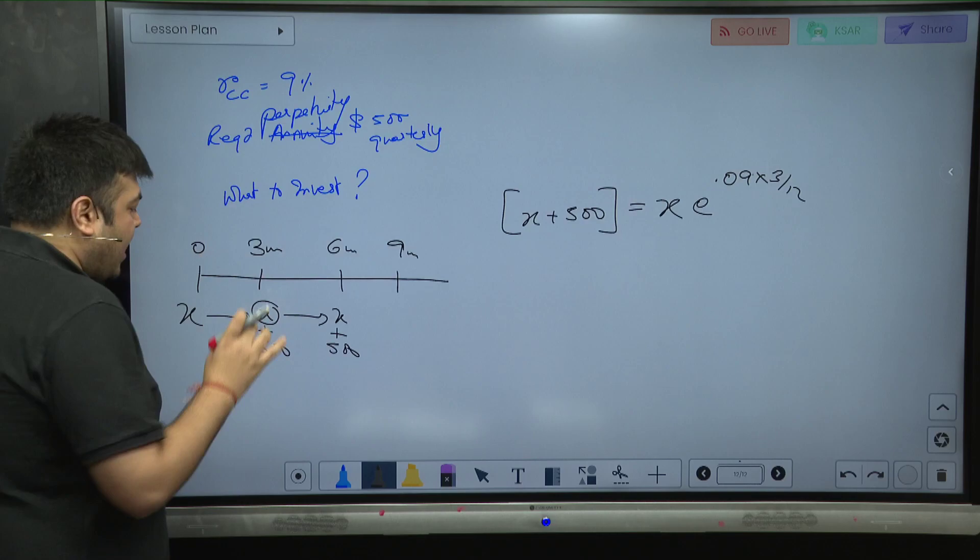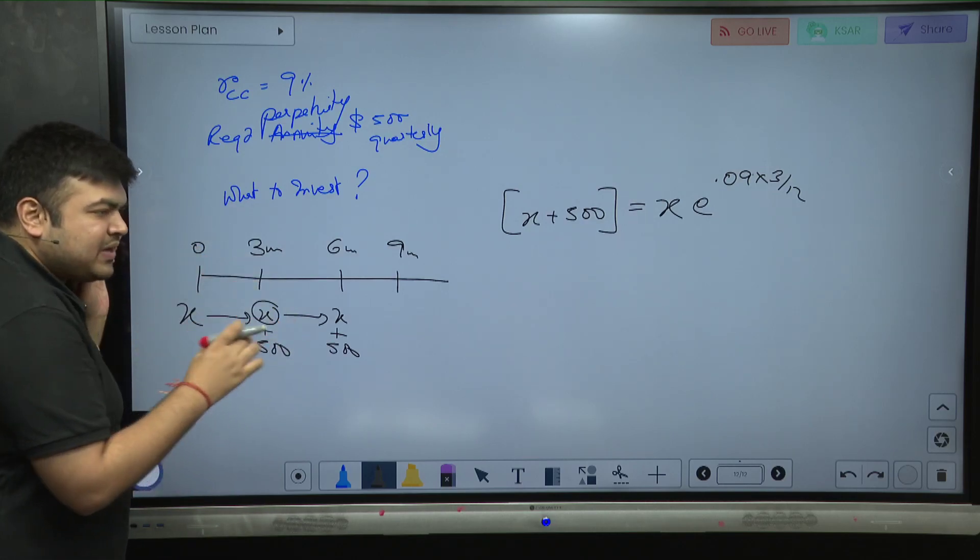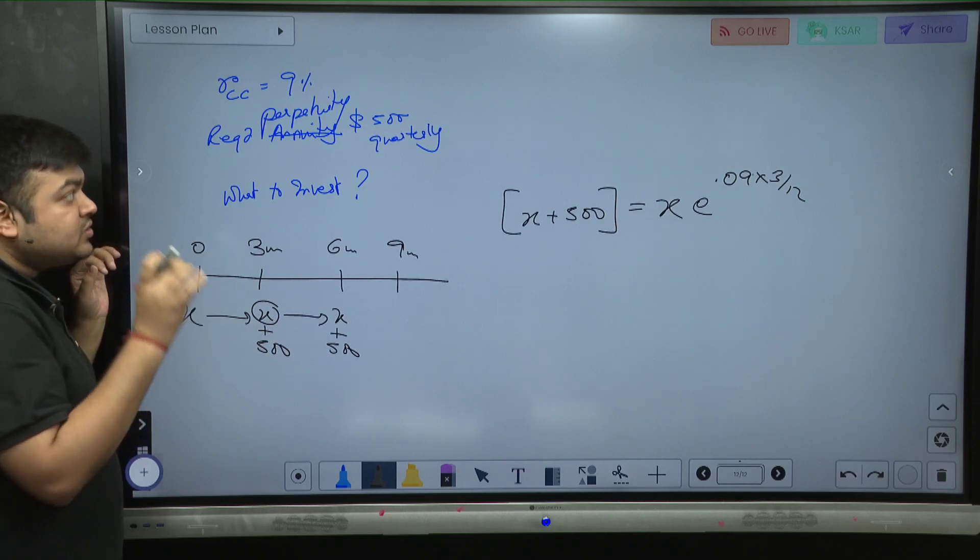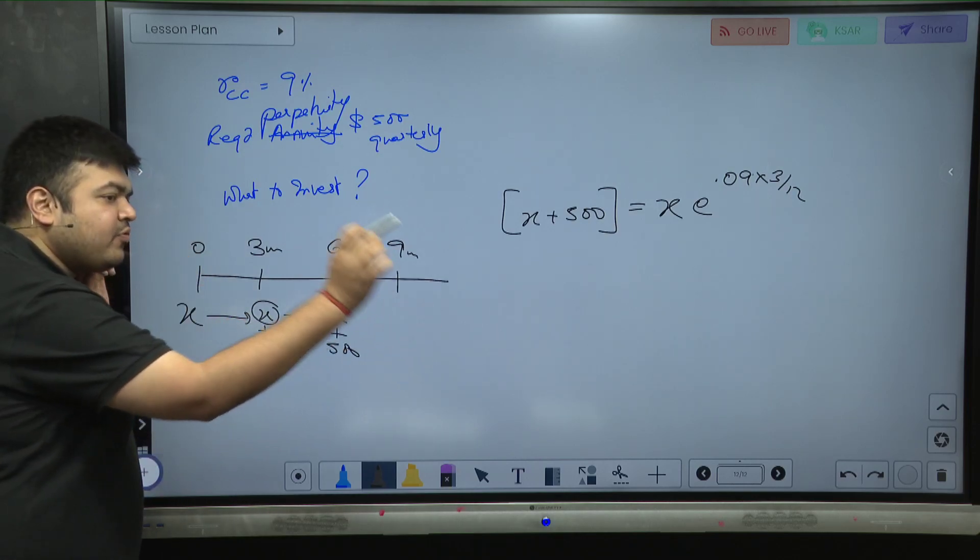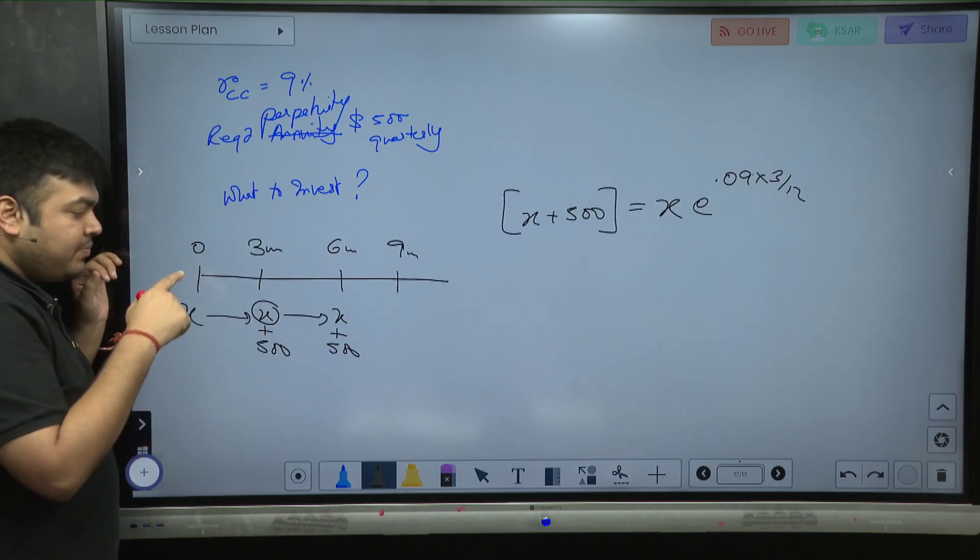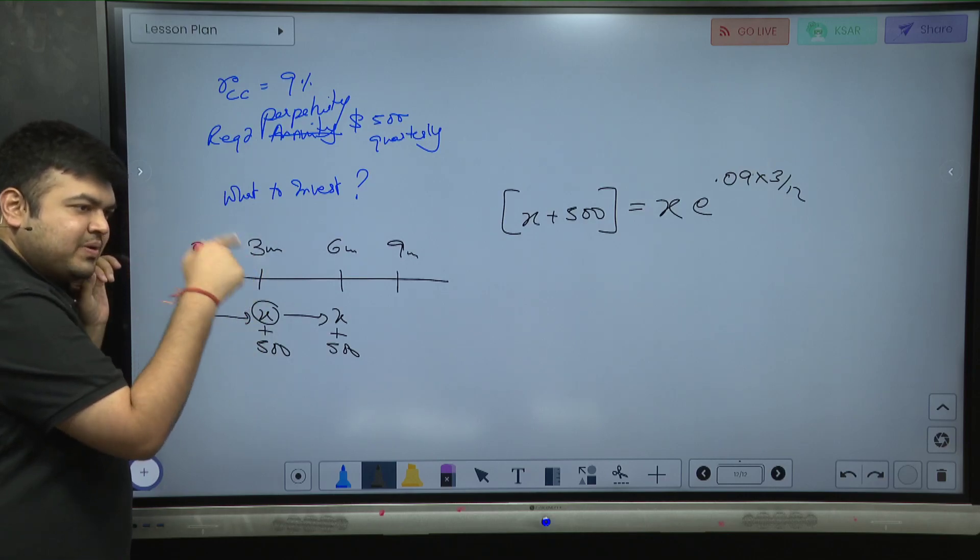Understand what we are doing. I want to invest an amount x today. I want that to become x plus 500 because 500 is a perpetuity. I want to be able to take out 500 forever and ever.